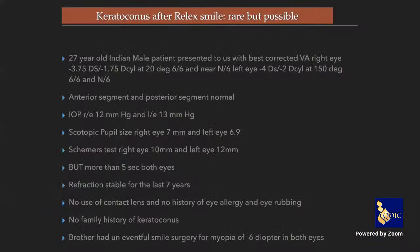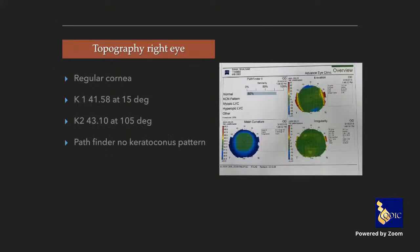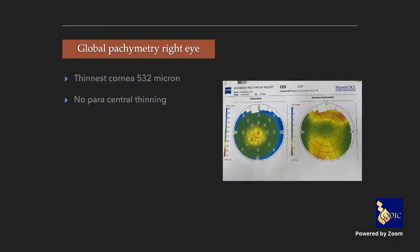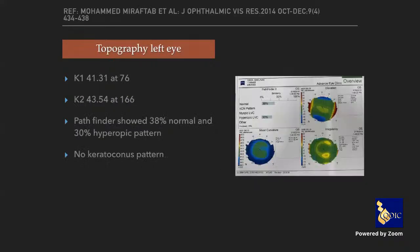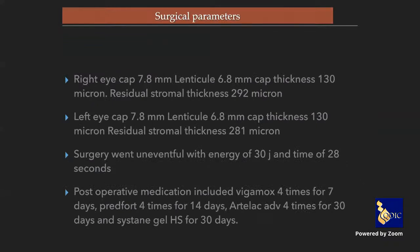A rare but serious complication I've encountered is post-refractive keratoconus. A 27-year-old patient with perfectly normal keratometry, refraction, topography, no family history, and corneal thickness of 532 microns — no inferior steepening, keratometry not steep at all — underwent an uneventful SMILE procedure. Yet after one week, vision was 6/7.5 in the left eye.